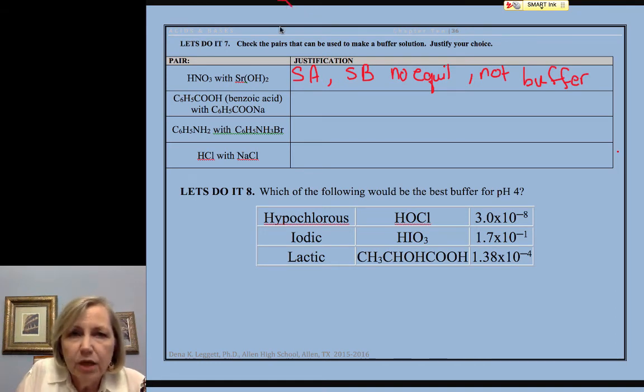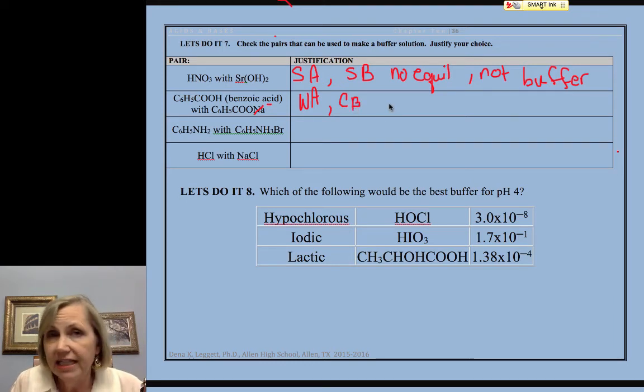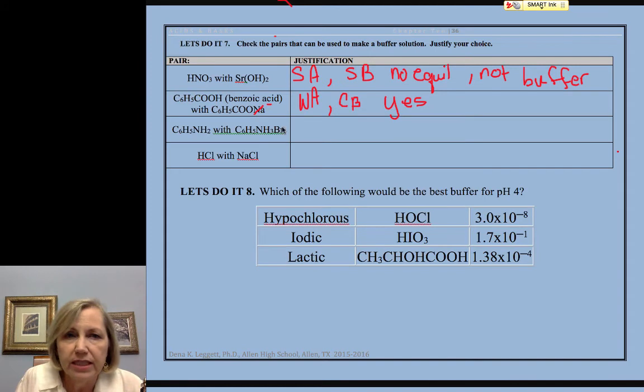The next one is benzoic acid. That is a weak acid. Now, you've got to get good at throwing off those spectator ions. So if I threw off the sodium plus, I have the benzoate ion. That's my conjugate base. That's why we did that conjugate activity in the hopes that you would recognize these things. So learn to throw off spectator ions. And that's yes. As long as I have some of each of those, I have an equilibrium, I have a buffer system.